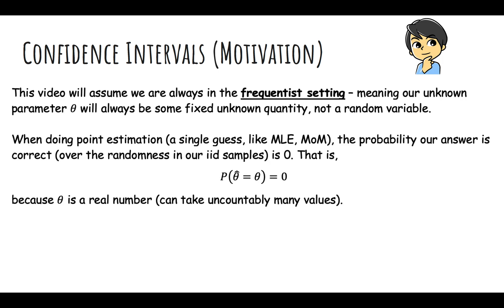When doing point estimation, the probability our answer is exactly correct is zero. The probability that your estimator equals the true parameter is zero, because theta is a real number and can take uncountably many values. Imagine you're estimating the probability of heads on a coin - you're not going to get exactly correct. You might be very close, but not perfectly correct.